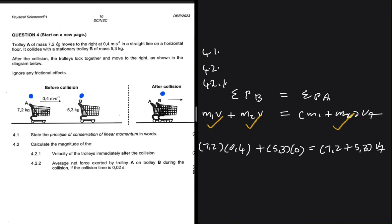If I put 7.2 multiplied by 0.4 on my calculator, I'm getting 2.88 and 5.3 multiplied by 0, that will just be 0. And that will all be equals to, now I have 7.2 plus 5.3, which is 12.5. So I have 12.5 multiplied by VF.